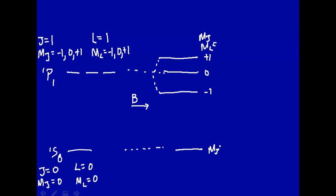Here, M_J is equal to 0. So it looks like we're going to have three possible transitions, one there, one there, and one there. Let's take a look at the selection rules to see whether all of these are allowed.